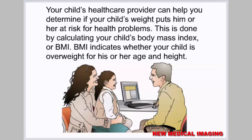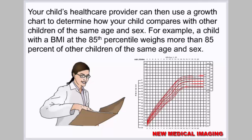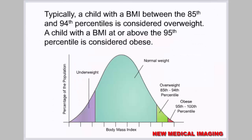BMI indicates whether your child is overweight for his or her age and height. Using a growth chart, the health care provider can compare your child with others of the same age and sex. A child with a BMI between the 85th and 94th percentiles is considered overweight, while a child with a BMI at or above the 95th percentile is considered obese.